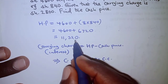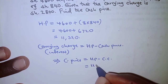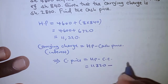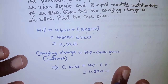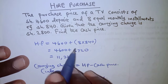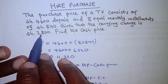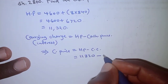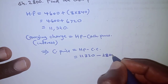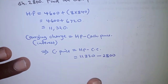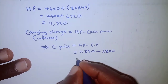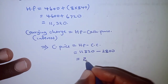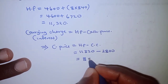The hire purchase price we already have as 11,320, minus the current charge. The current charge has already been given as 2,800, so substituting that, we have 11,320 minus 2,800, and that finally gives us 8,520.